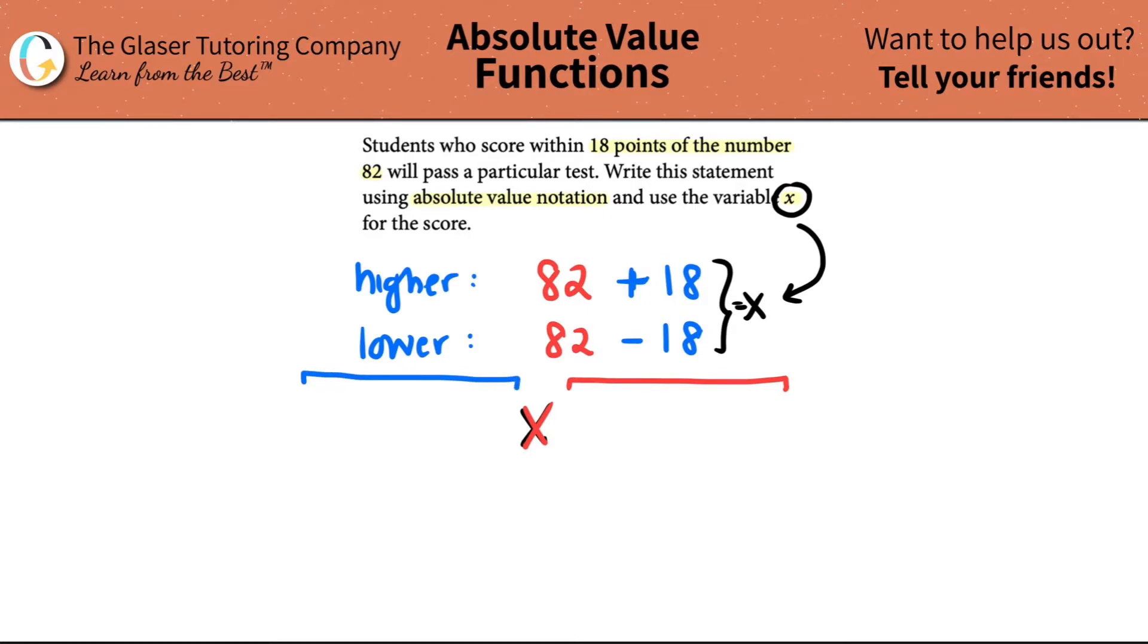The higher limit was stating that you just had to be 82 plus 18 and the lower limit was 82 minus 18. Now we just have to add in our greater than or equal to signs. If this was the higher limit...